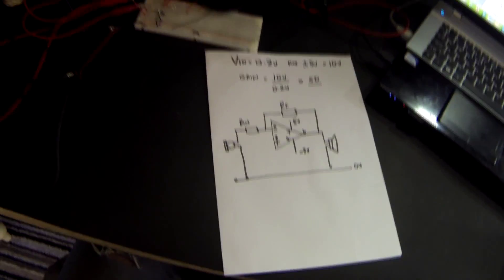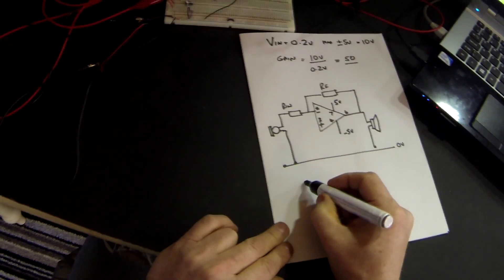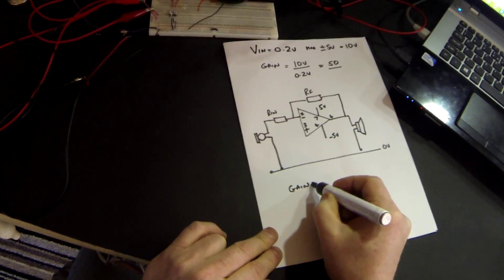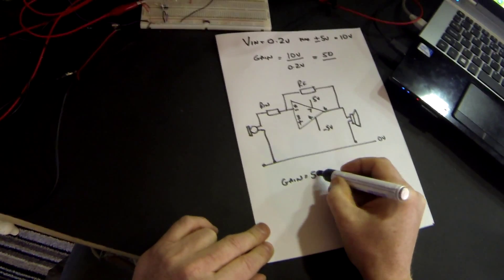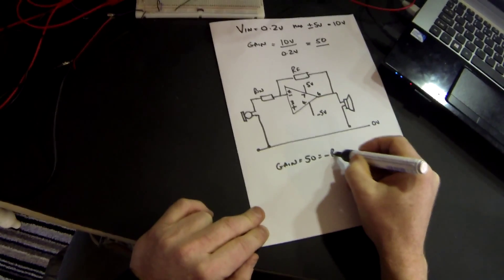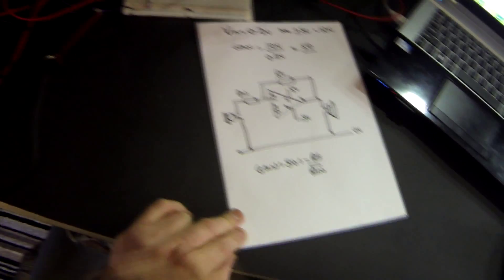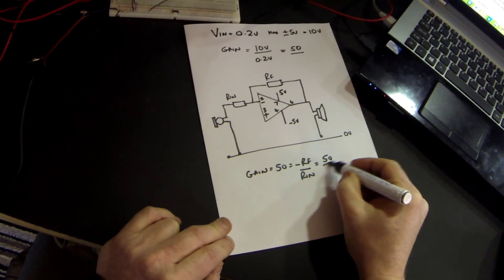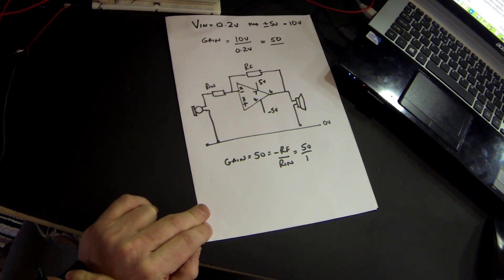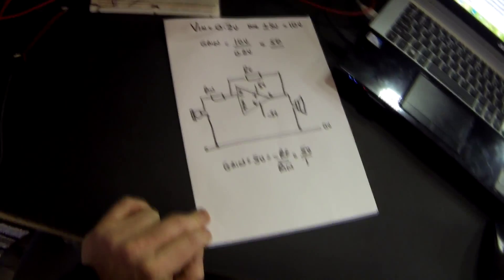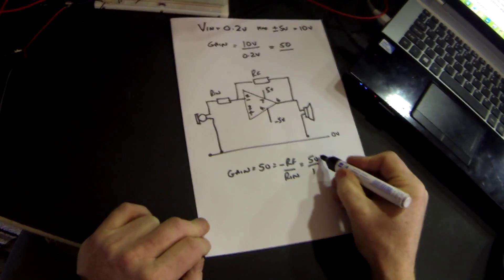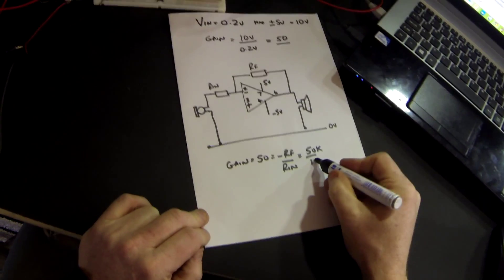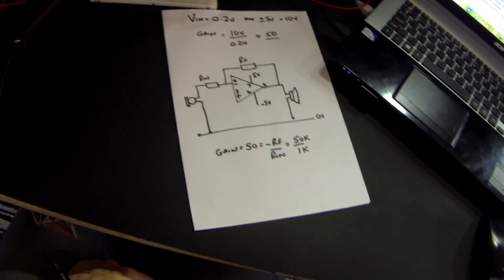Now what value do we want for RIN and RF? Well we know that the gain is equal to 50 which is equal to minus RF over RIN. So the ratio of those two must be 50 to 1. But we're not going to use those as the values of resistors so if we multiply both of them by 1000, that gives us 50k and 1k.